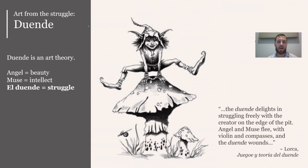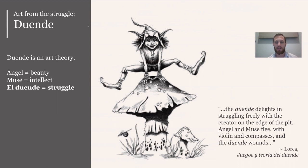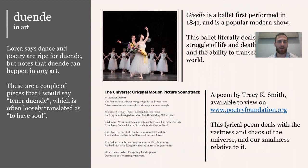Lorca talks about three paradigms: the Angel, the Muse, and El Duende. The Angel inspires artists simply through beauty. The Muse inspires through intellect — that Eureka, aha moment. But Duende is different. Depicted as a little goblin-like creature, often mischievous, it represents the idea of struggle as art — art that comes out of something the artist is wrestling with. As Lorca writes: 'The Duende delights in struggling freely with the creator on the edge of the pit. Angel and Muse flee with violin and compasses, and Duende wounds.'